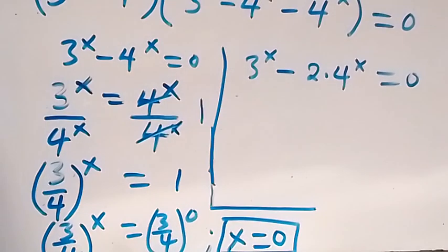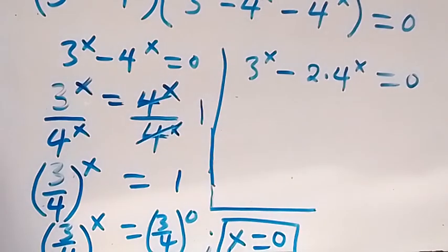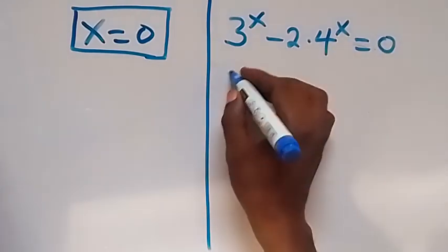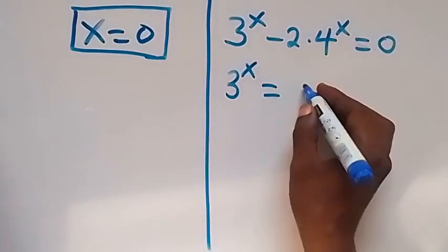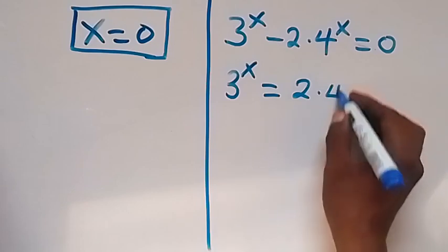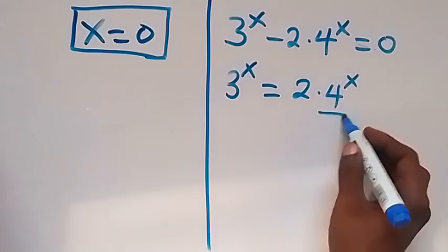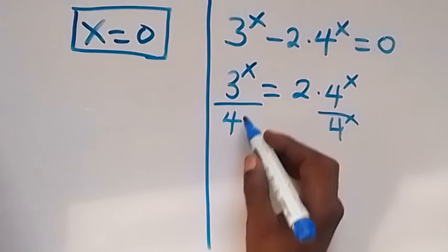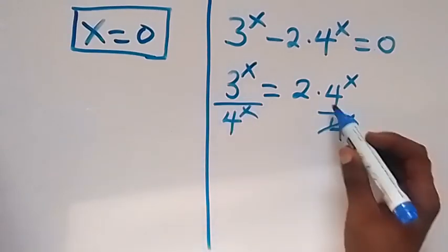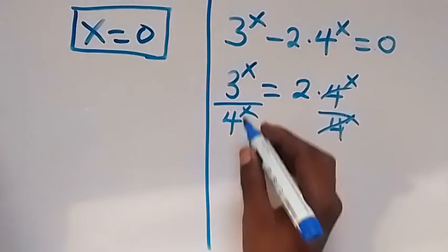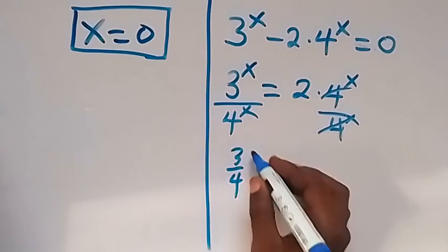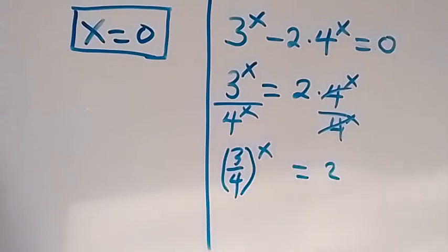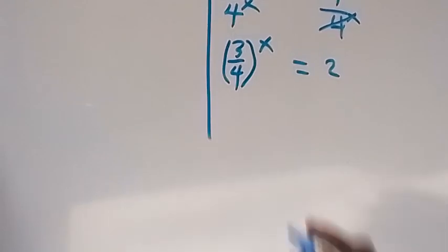On the second case we can also solve. Taking minus 2 times 4 raised to power x to the other side it becomes positive, so we have 3 raised to power x equals 2 times 4 raised to power x. Now let's divide both sides by 4 raised to power x, which gives us 3 over 4 raised to power x equals 2. Then we take the log on both sides.